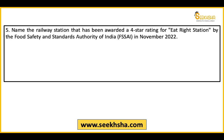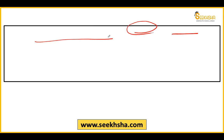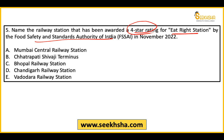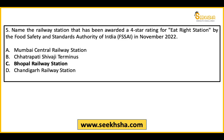Fifth question: Which railway station has received a 4-star rating for 'Eat Right Station' by FSSAI? Options include Mumbai Chhatrapati Shivaji, Bhopal, Chandigarh, and Vadodara. The right answer is Chandigarh Railway Station.